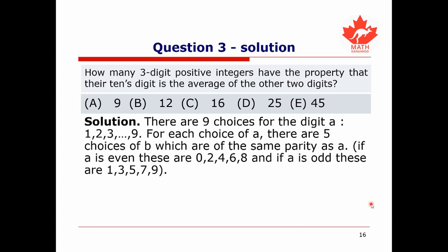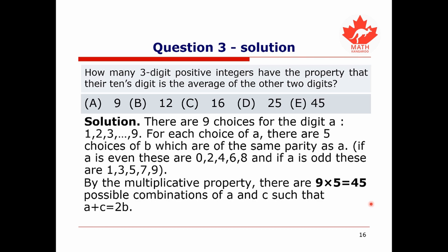This is the perfect situation to use the multiplicative property: we have nine choices for A, and for each choice of A there are five possible choices for C. So by the multiplicative property, the total number of choices is 9 times 5 equals 45 possible combinations of A and C such that A plus C equals 2B. So the answer to this question is E, 45.